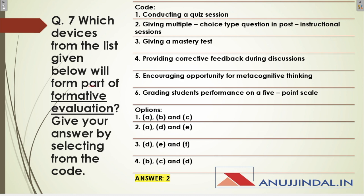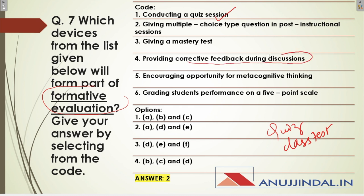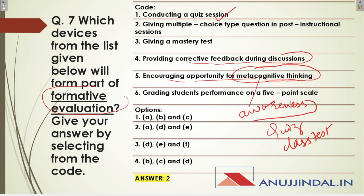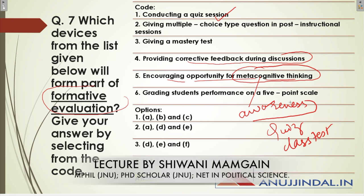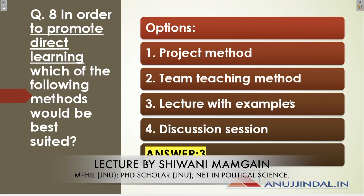Question seven asks which devices form part of formative evaluation. Formative evaluation runs throughout the whole year, unlike summative evaluation which comes at the end. It includes quiz, class tests, assignments, and projects. The correct code includes: quiz, providing corrective feedback during discussion, and encouraging opportunity for metacognitive thinking — which means developing awareness — as it is a part of formative evaluation.